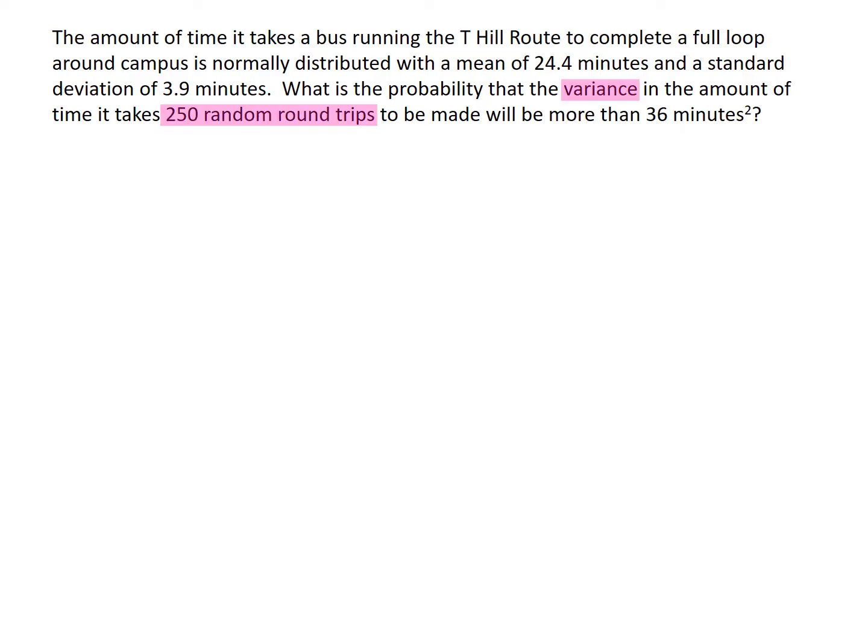The variance here is the variance of the 250 trips. It's a lot of trips, but it's still a sample. So the word variance here is s-squared, not sigma-squared. We want to know the probability that our sample variance is greater than 36 minutes squared. Just like with x-bar and p-hat, we need to know how s-squared behaves — we need to know the distribution.